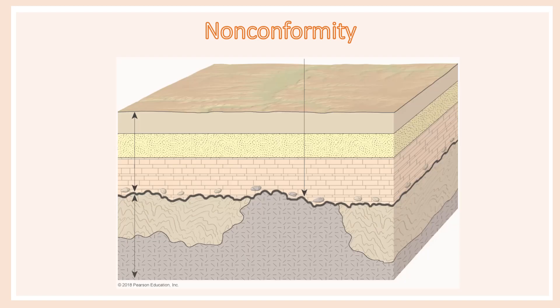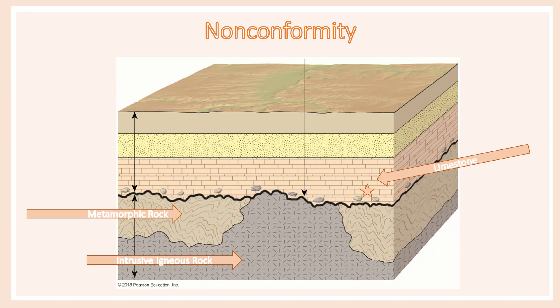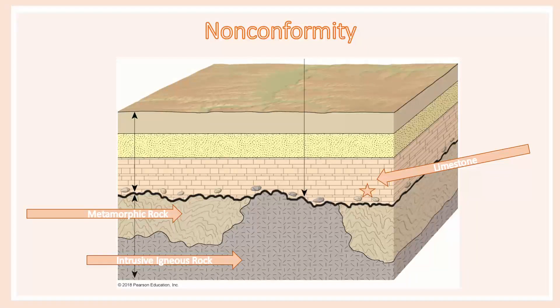Angular unconformities are kind of the easy one. Are you ready for something a bit more challenging? Describe what you see. I'll start: I see an igneous intrusive rock here and some metamorphosed rock here. Then we have some limestone with broken-up bits of that intrusive igneous rock in it and some of the metamorphic rock in it, and then more horizontal units above it. There's also this line where the igneous and metamorphic rocks end and the sedimentary rocks begin — that line is a nonconformity.